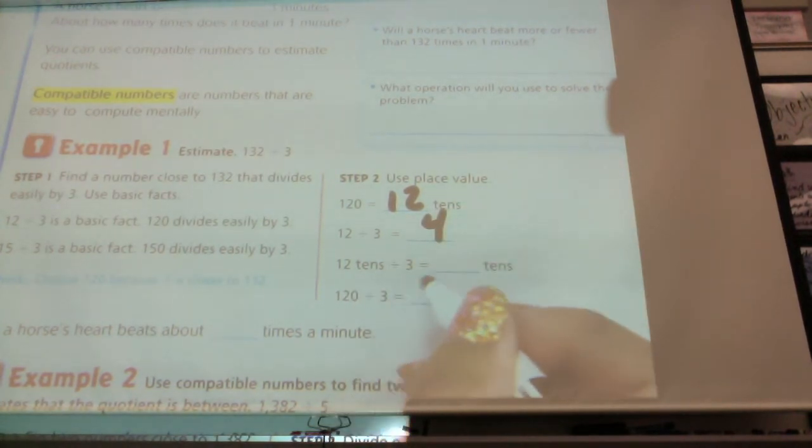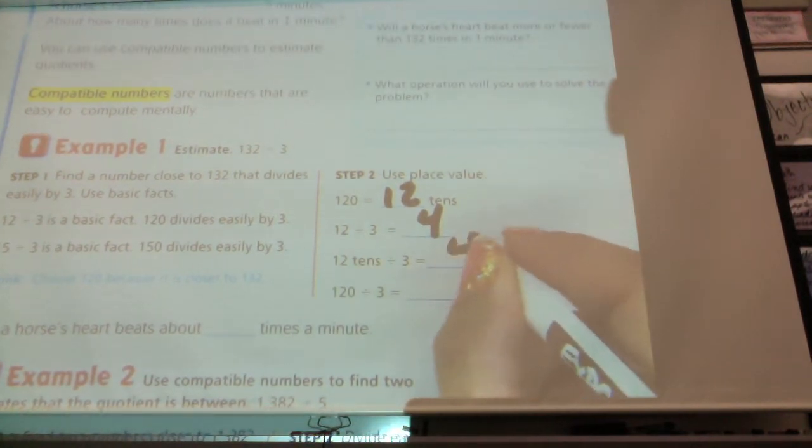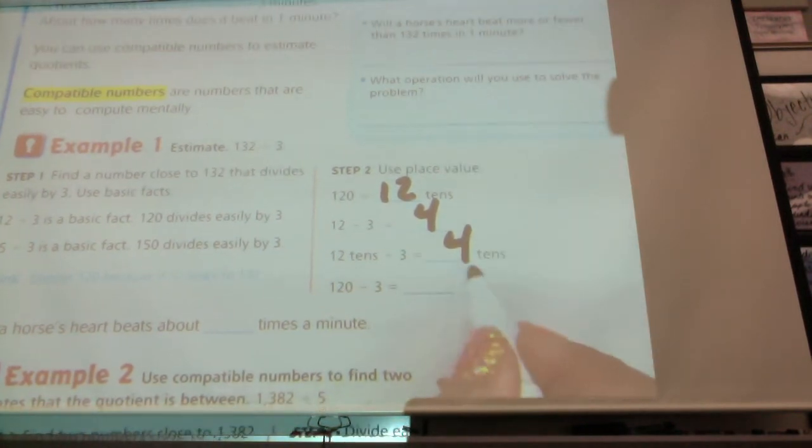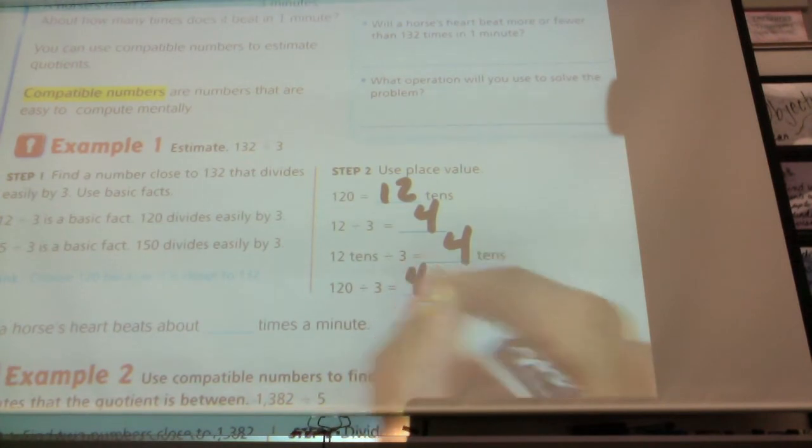So 12 tens divided by 3 equals how many tens? 4 tens. This is just like yesterday's homework. So 120 divided by 3 equals 4 tens, which equals how much? 40. There you go.